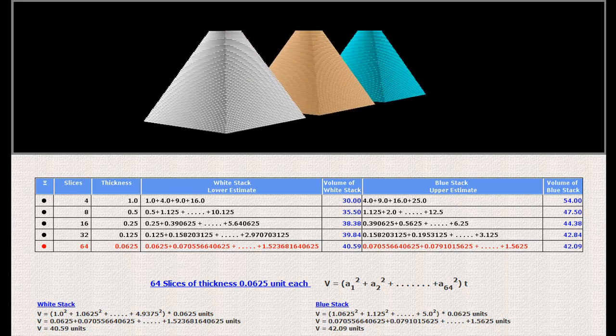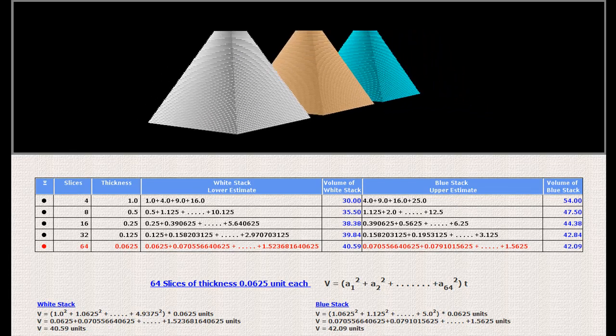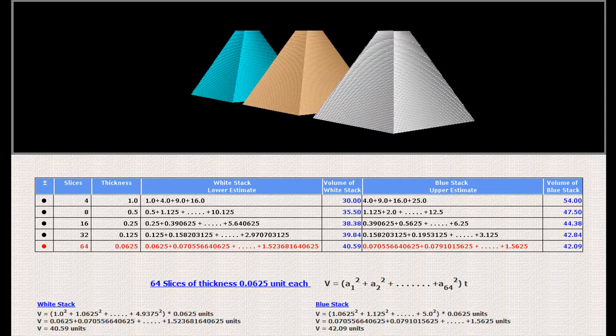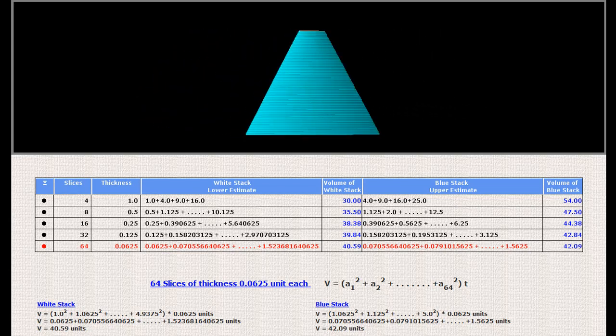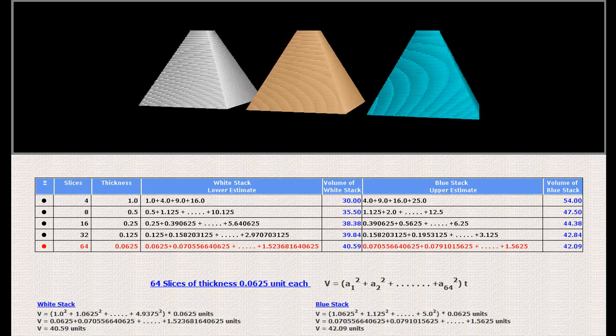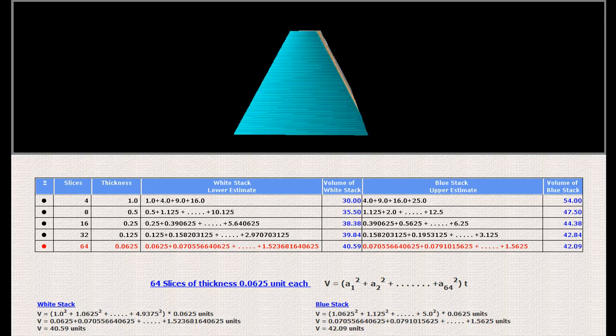At this point, the pyramid and the two stacks look the same. The two stacks have a stepwise variation of side, whereas the pyramid has a continuous variation of side. We can increase the number of slices indefinitely and approach the continuous variation very closely. The difference between the lower estimate and the upper estimate can be made as small as we want.